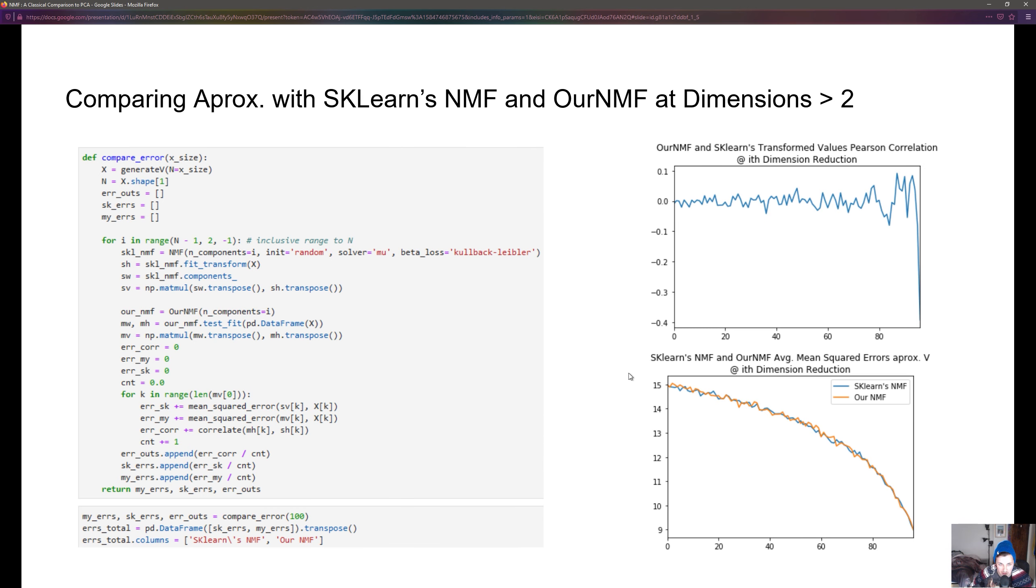What this means in our function is that we can get the W and H matrices from scikit-learn's NMF and we can also get our W and H matrices from our implementation of NMF and we can compare those values at each iteration of the dimensionality reduction.